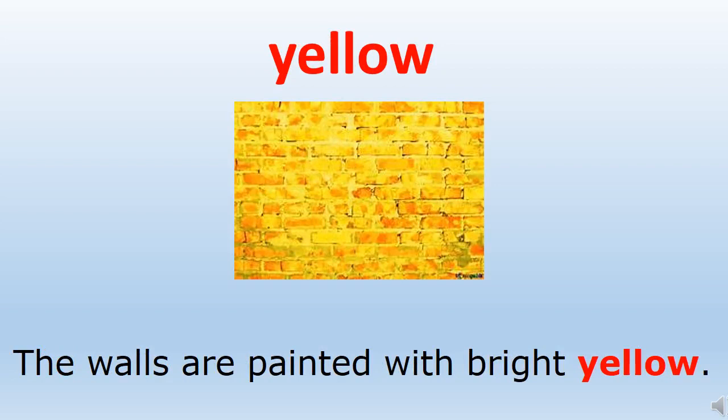The word is yellow. Now children, you already know that yellow is a name of a color, and yellow is a primary color. Now let's make a sentence with yellow: the walls are painted with bright yellow.